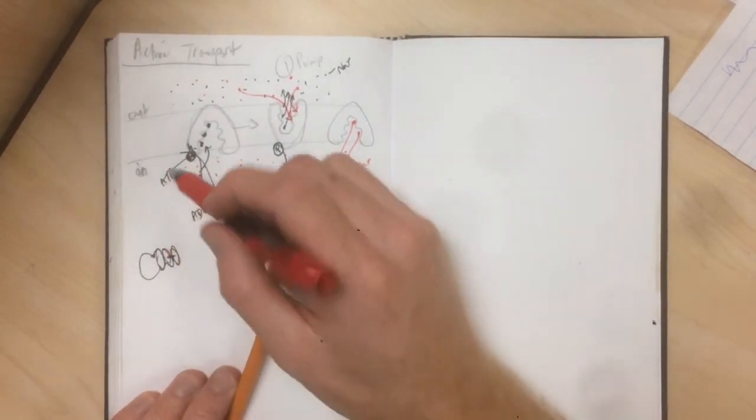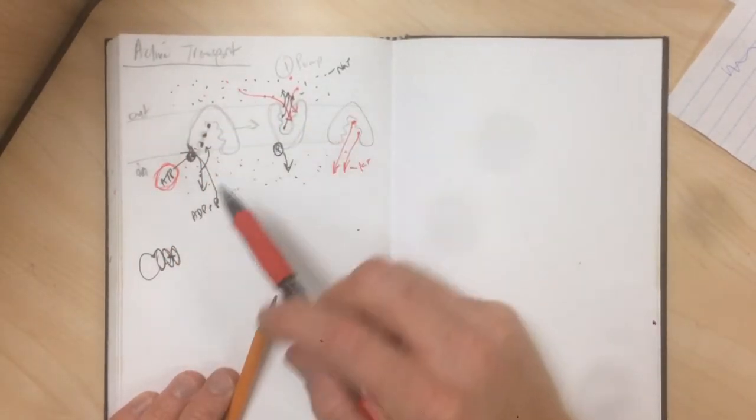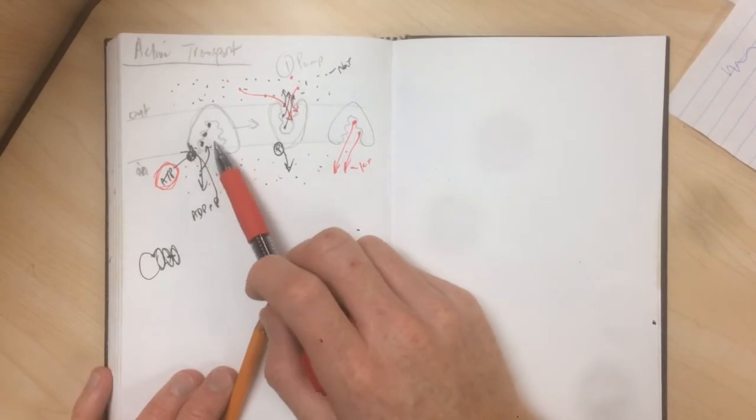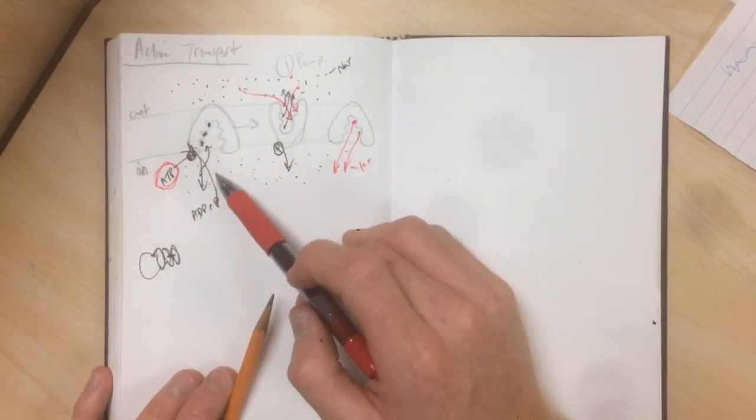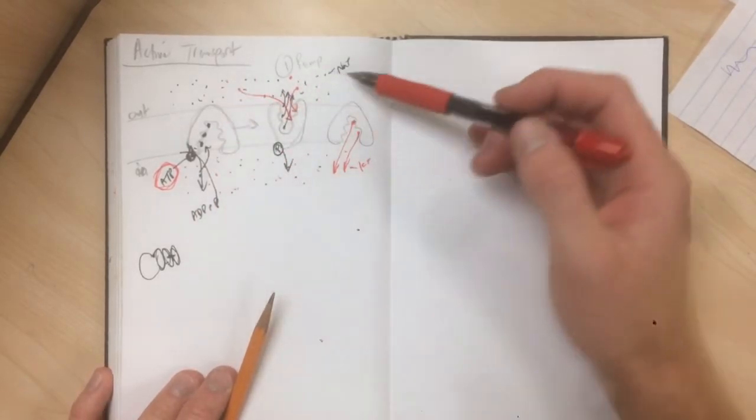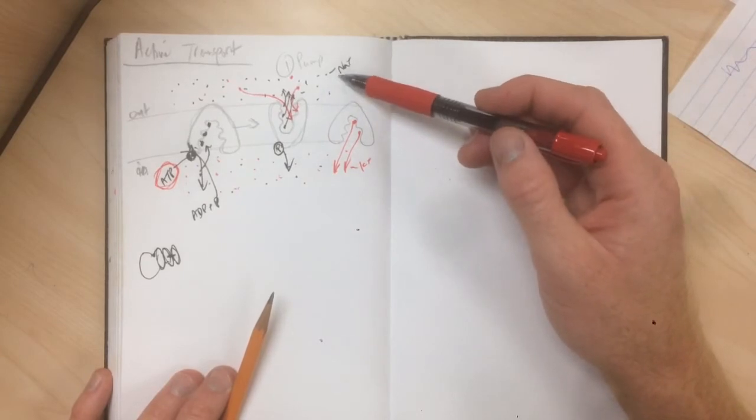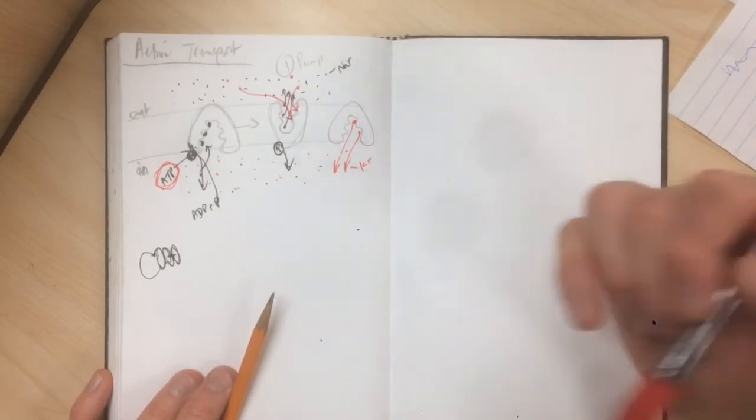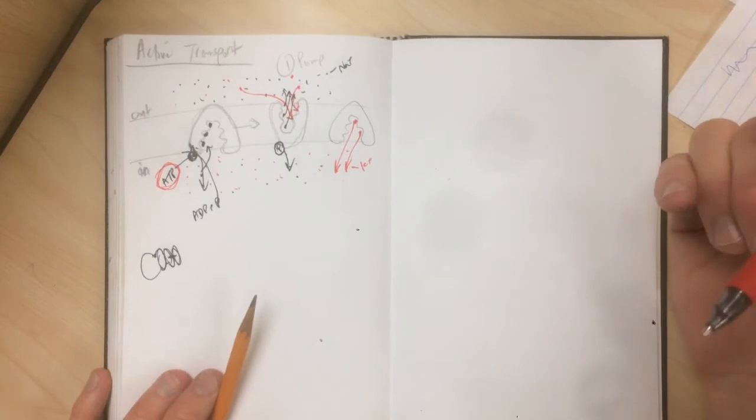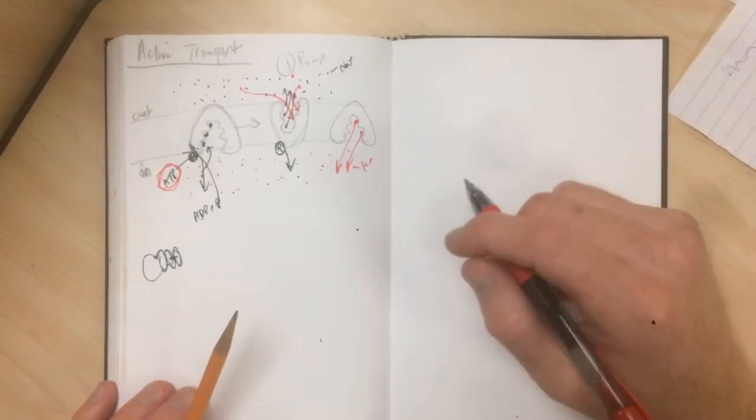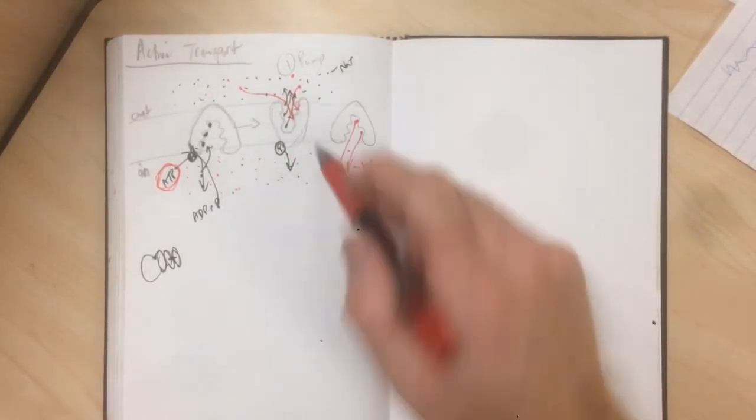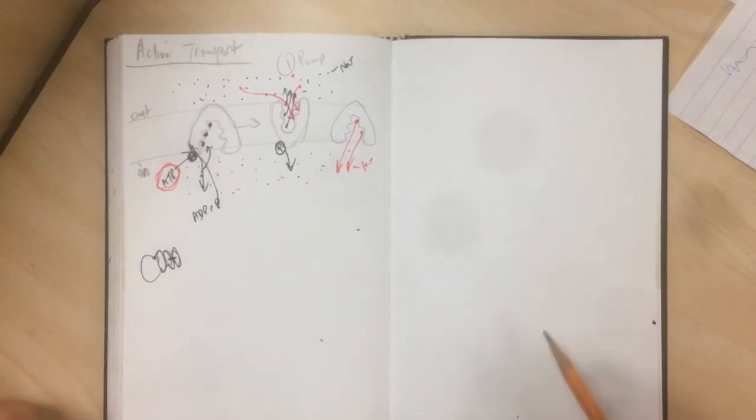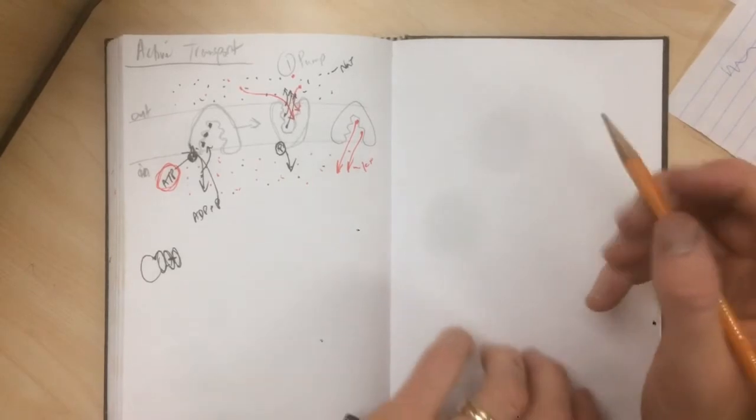So by consuming one molecule of ATP, we're able to move three sodium ions from the inside of the cell to the outside of the cell, and two potassium ions from the outside of the cell to the inside of the cell. That's against their concentration gradient, and it requires energy. So that's one way that things can move. Pumps are one example of active transport.